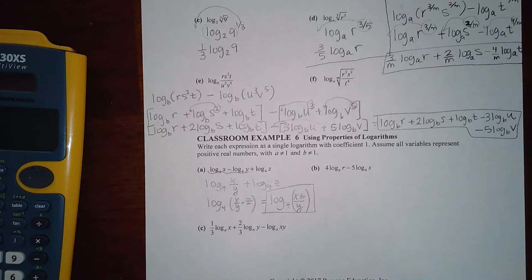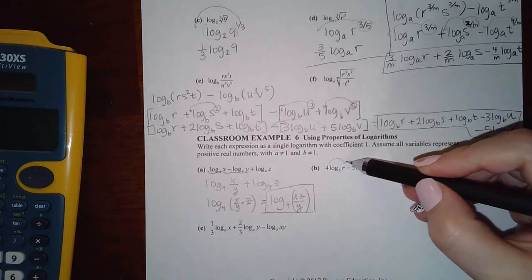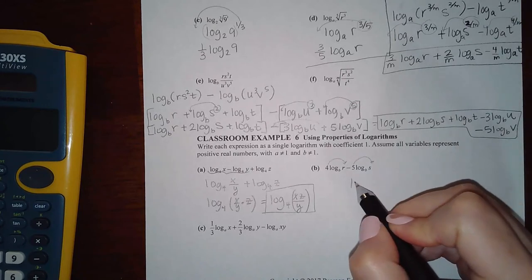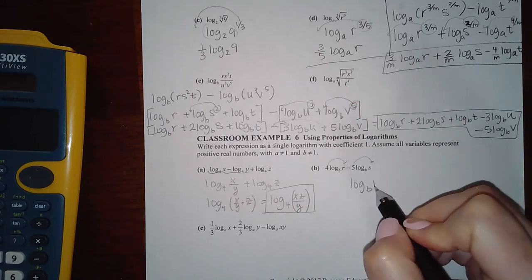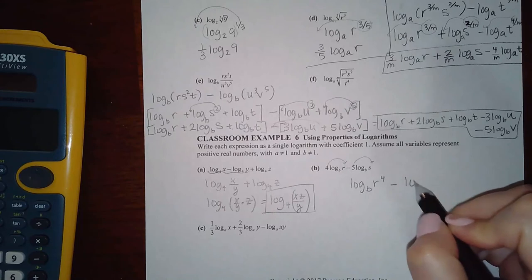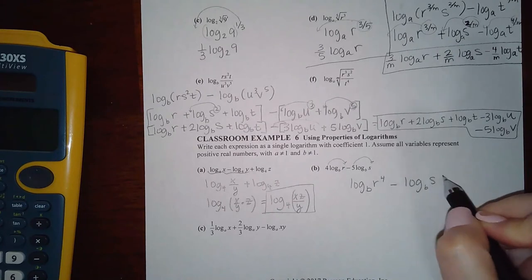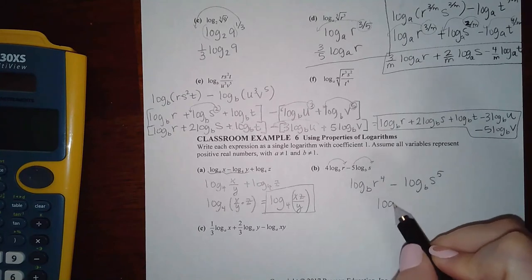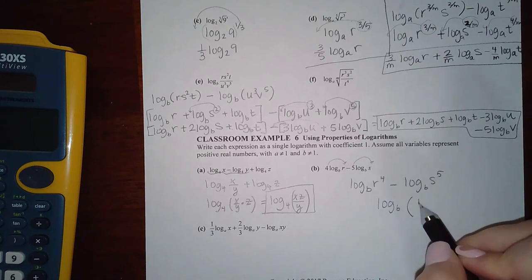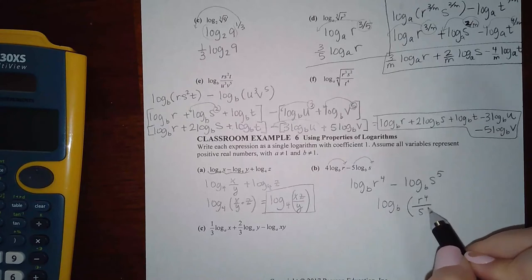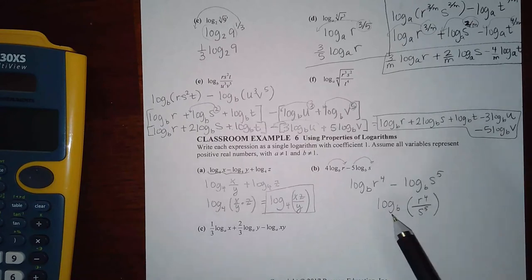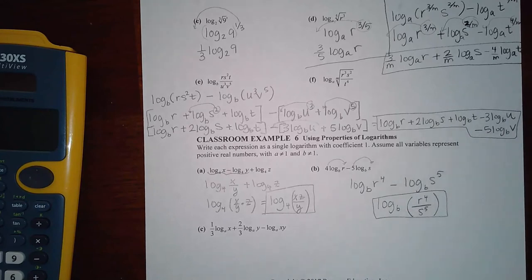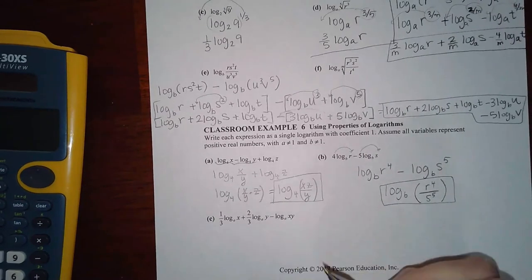For part b, there are numbers in front so those need to go up as exponents first: log base b of r to the fourth, minus log base b of s to the fifth. Then convert the subtraction into a fraction: r to the fourth over s to the fifth. As long as you have just one log, you're done.